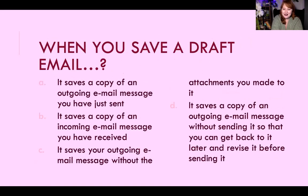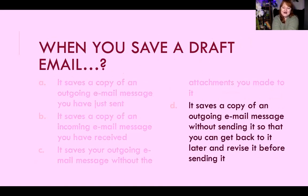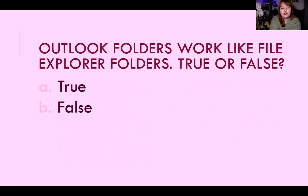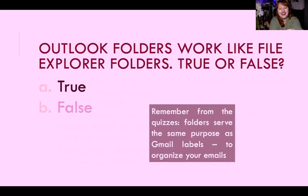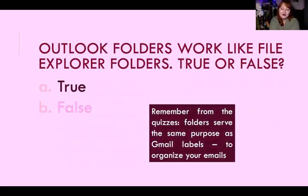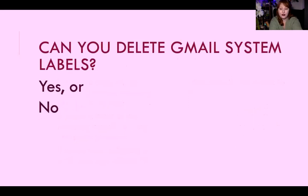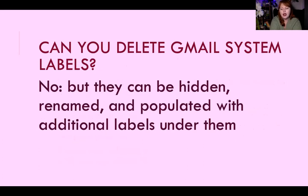When you save a draft email, it saves a copy of the message so you can edit it later. The email is saved and you can go back, make changes, and send it later without redoing the entire thing. Outlook folders work like File Explorer folders — that's true. Folders in Outlook and Gmail labels serve the same purpose. Can you delete Gmail system labels? No, you can't. But you can edit them — you can hide them, rename them, and add other labels underneath them as a subdirectory, which is called populating. They can be hidden, renamed, and populated, but not deleted.